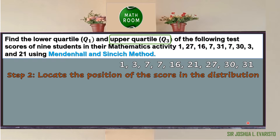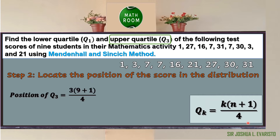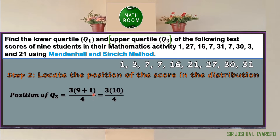Next, let us solve for the upper quartile, Q sub 3. We proceed to step 2 since the data is already arranged. The position of Q sub 3 = 3 × (9 + 1) / 4. Our k = 3 and n = 9. Computing: 9 + 1 = 10, 3 × 10 = 30, 30 ÷ 4 = 7.5.